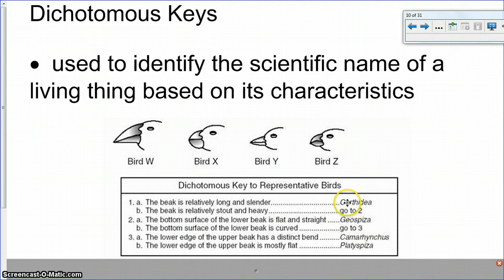Now, I know that these are genus names because they start with uppercase letters. If they were lowercase letters, then I know that they would be species names. So if I was doing bird Y, I would go back to the beginning and I'd ask myself the same question. So this one is Geospiza. Bird Y, the beak is relatively long and slender. True. So this is a certhidea.